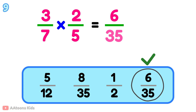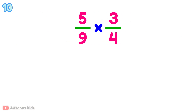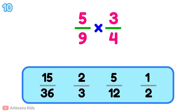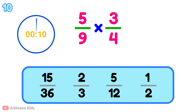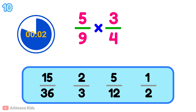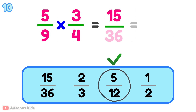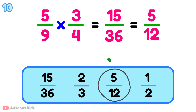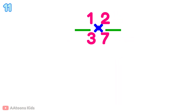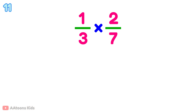6 over 35. What is 5 over 9 multiplied by 3 over 4? 5 over 12. What is 1 over 3 multiplied by 2 over 7?